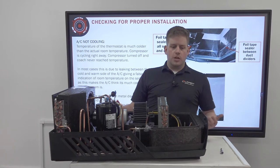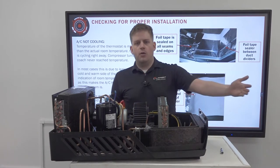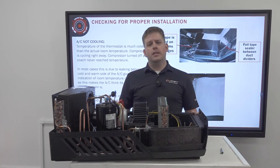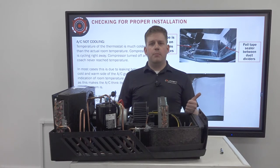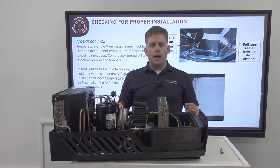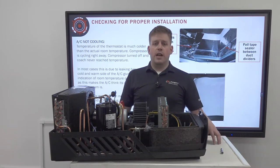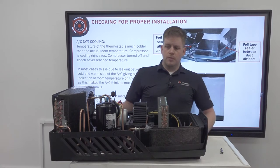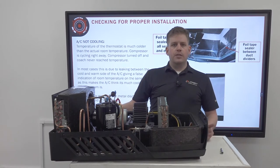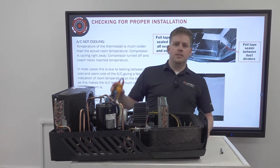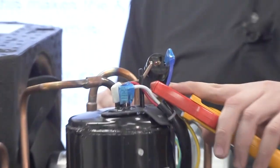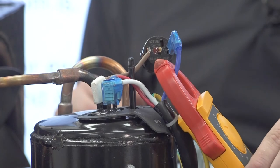To get an exterior temperature, don't rely on what the weatherman says or the ground temperature. Physically climb onto the roof and get a real-life temperature of the actual roof. Once you have that roof temperature and the unit has been running 15 minutes, take your multimeter, clamp onto the blue wire going to the compressor, and get an amp draw.